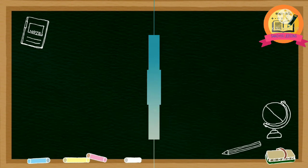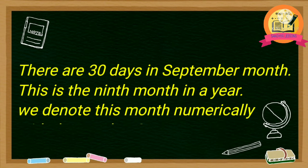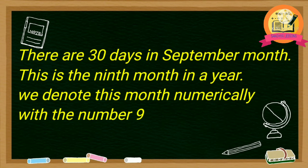September — S-E-P-T-E-M-B-E-R. There are 30 days in September month. This is the ninth month in a year. We denote this month numerically with number 9.